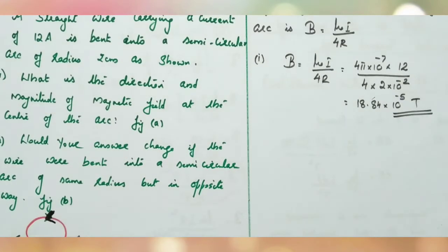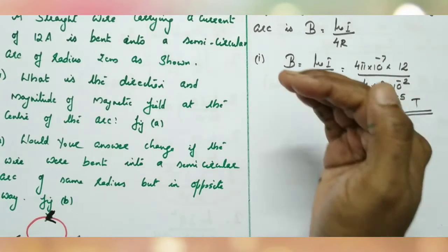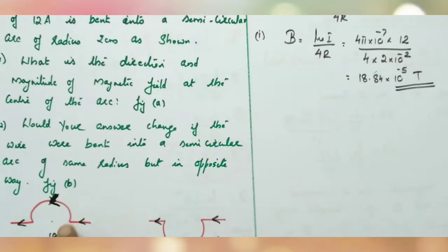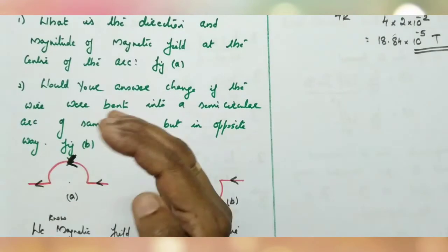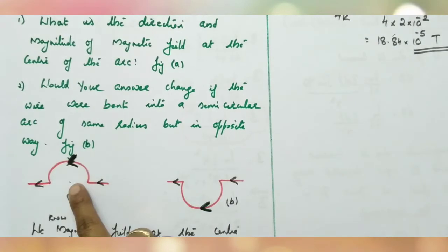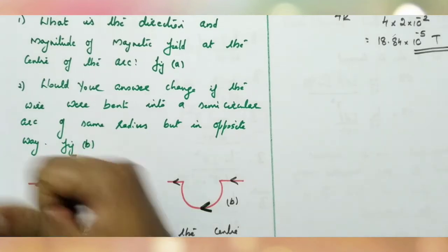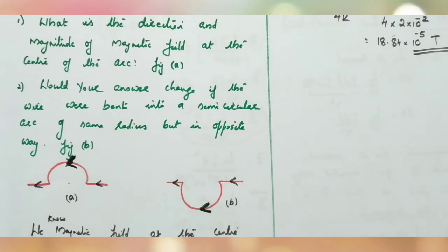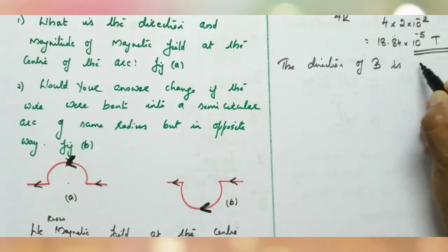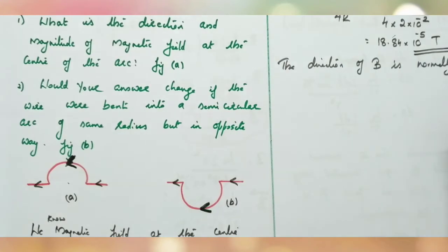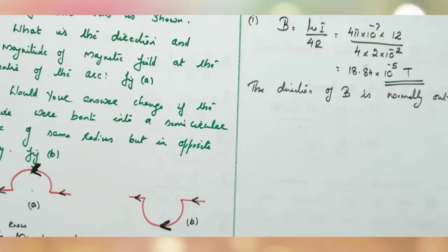What is the direction of the magnetic field? The direction of the magnetic field is given by the right-hand thumb rule. The four fingers represent the direction of current and the thumb represents the direction of the magnetic field. Here the current is in this direction, so the thumb is in the outward direction. Therefore, the direction of the magnetic field is normally out of the paper.